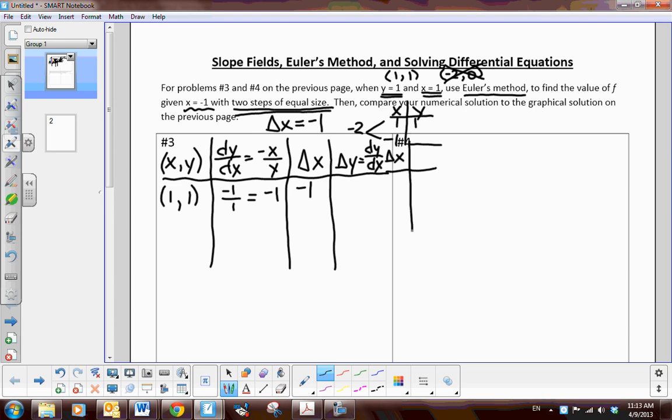And our change in y, we know that that is the derivative times the change in x. So that would be negative one times negative one. So that means the change in y will be positive one. So our new point on this function is the x value is going to change by a negative one. So that means if I change by a negative one, my new x value will be zero. And my y value is going to change by one, so one plus one is two. So the new point on the graph is zero, two.